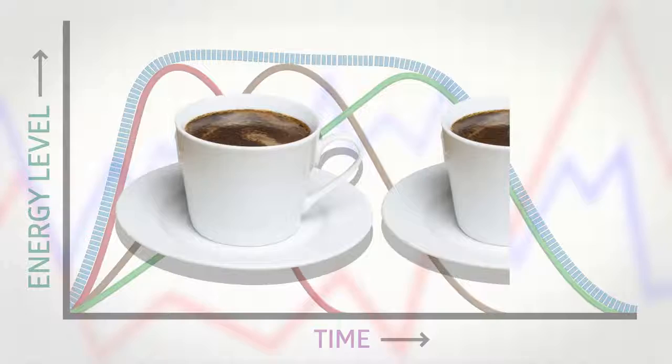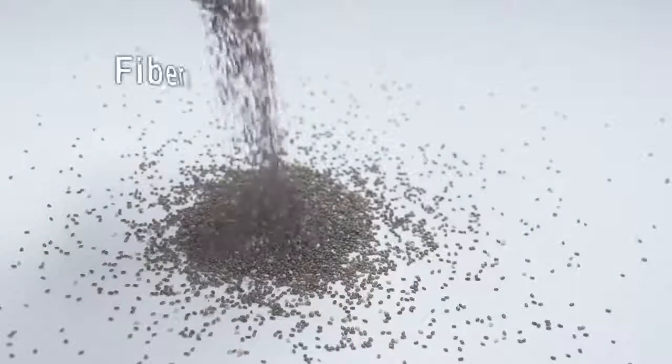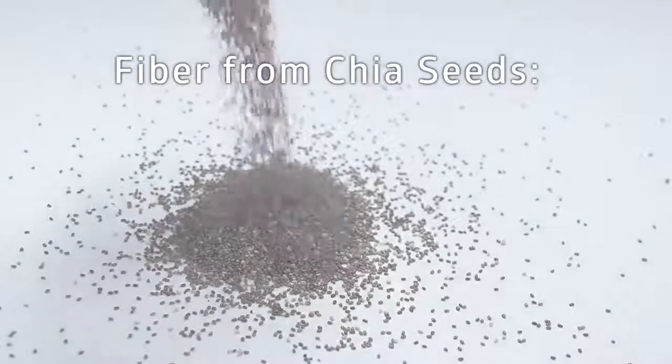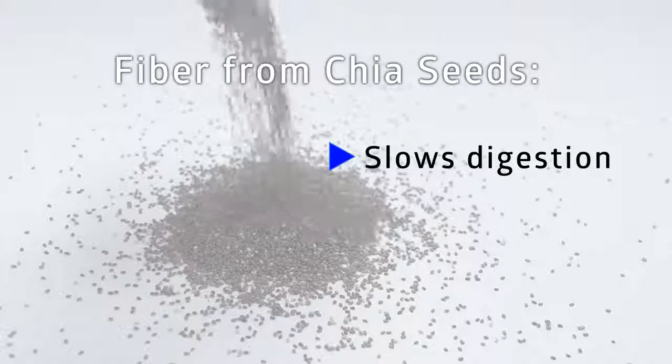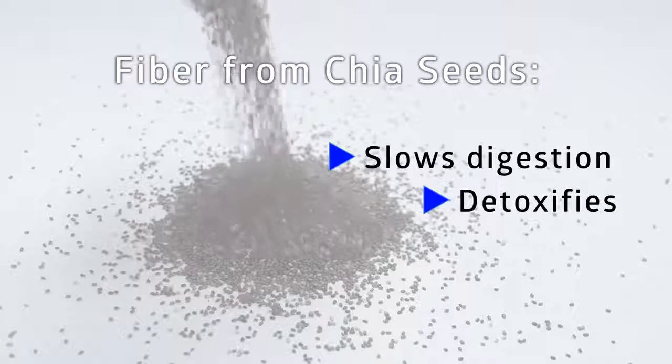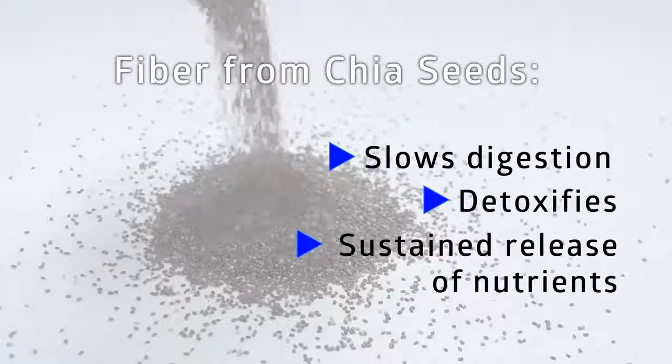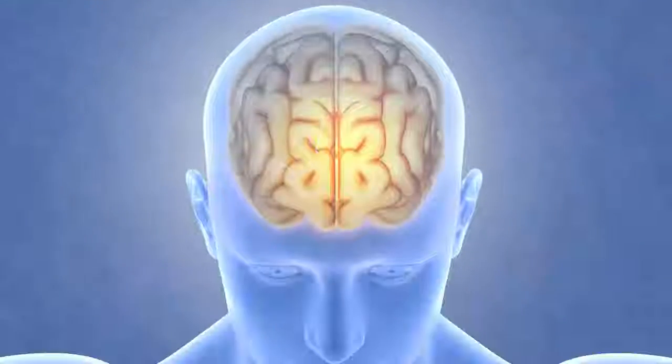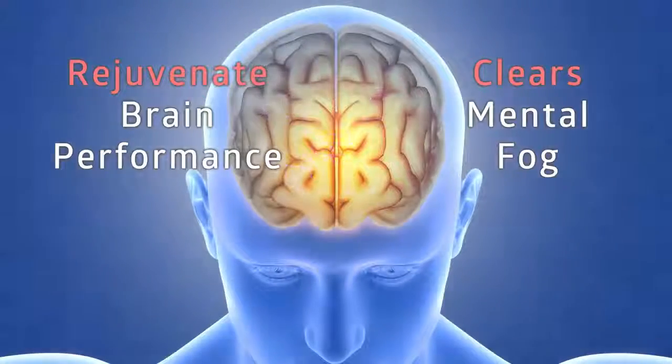Because of two more synergistic ingredients, the natural fiber from Q Rev Focus's chia seeds slows the digestive process, detoxifies, and leads to a sustained release of nutrients. This process opens neural pathways to rejuvenate your brain's performance and clears your mental fog.